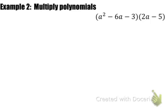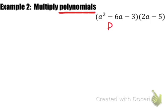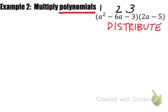In example 2, we have to multiply two polynomials together. Just like before, when we multiply polynomials, we have to make sure we distribute every single term using multiplication to every single term in the other polynomial. I have a strategy to make sure we account for every single term — I'm going to label my terms 1, 2, and 3 and draw a box to the left.